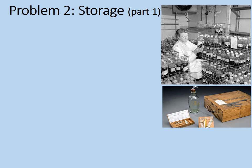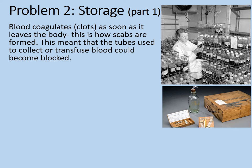The next problem: storage. Blood coagulates — that means clots — as soon as it leaves the body. This is how scabs are formed and it's actually a really useful part of blood's properties. This meant that the tubes used to collect or transfuse blood would become blocked. Scientists looked for a chemical which would stop this without damaging the blood or stopping it being useful.